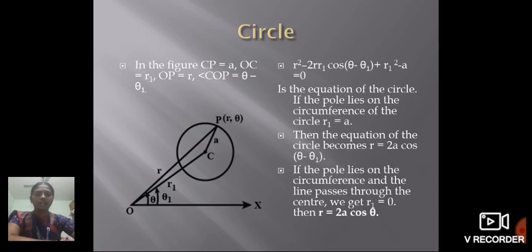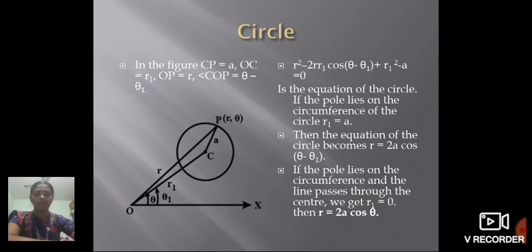Next is the circle. C is the center, P is the point on the circle with coordinates (R, theta), and A is the radius. The angle COP equals theta minus theta1. The equation of the circle is R square minus 2R R1 cos(theta minus theta1) plus R1 square minus A equal to 0. If the pole lies on the circumference, then R1 equals A, and the equation becomes R equal to 2A cos(theta minus theta1). If the pole lies on the circumference and the line passes through the center, R1 equals 0, giving R equal to 2A cos theta.